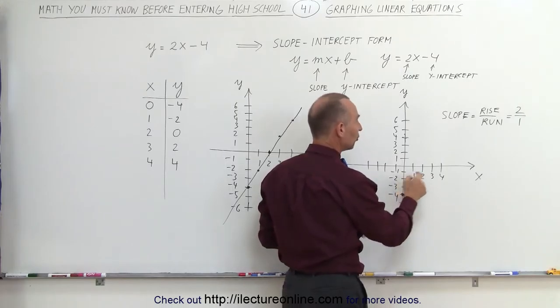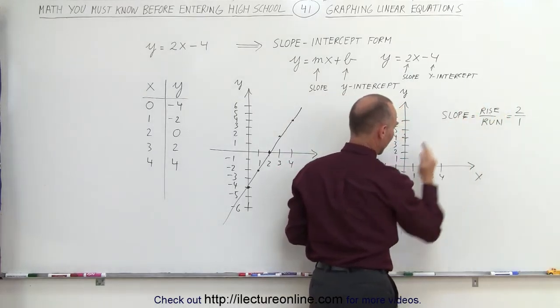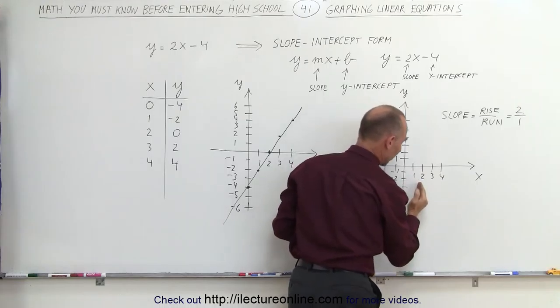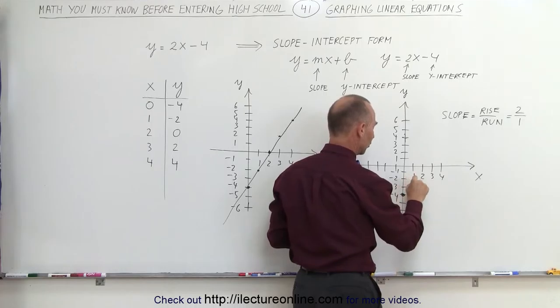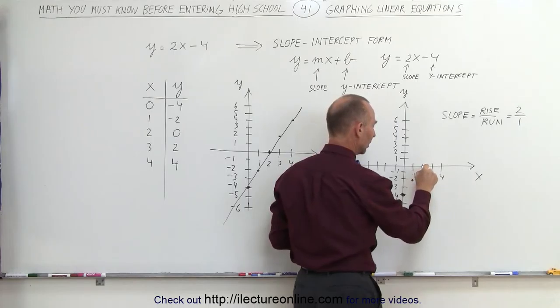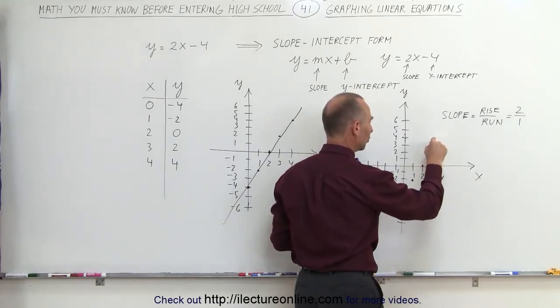If I go up 2 units, because that's what we mean by the rise, and then run 1 unit, meaning go to the right by 1 unit, I find another point on the line. So the rise is 2 and the run is 1. Again, I rise 2 and run 1. Then again I rise 2 and I run 1. I rise 2 and run 1.